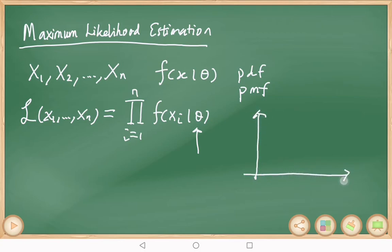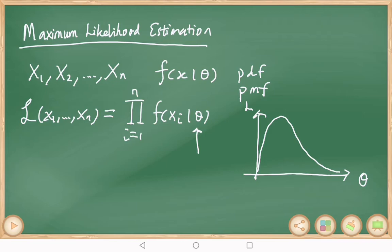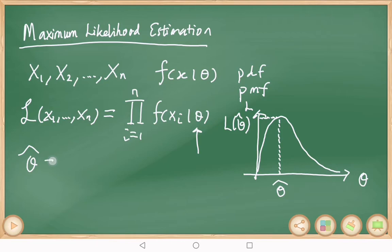So this is the likelihood function. When we want to find the maximum likelihood estimator for the parameter theta, we try to find the value of theta in the parameter space such that the likelihood function becomes as large as possible. If we sketch the graph here, suppose this is your theta and the likelihood function looks like this — for different samples your likelihood function will have a different shape.